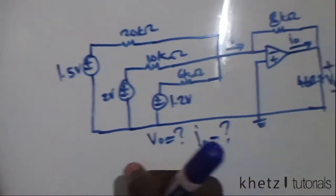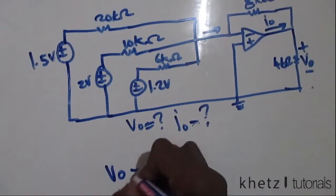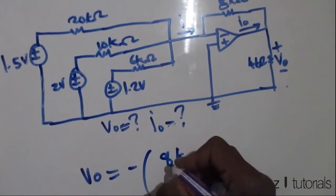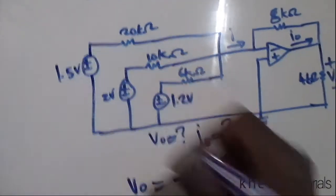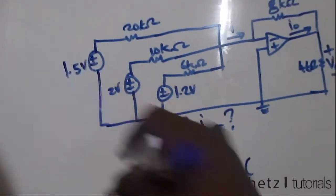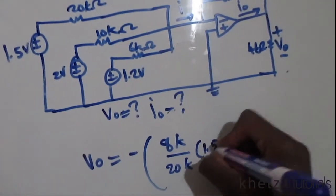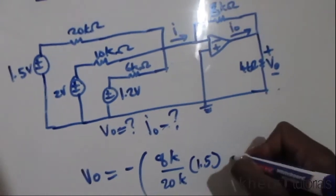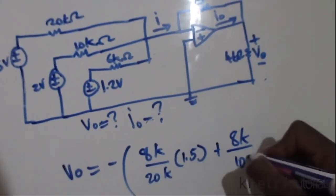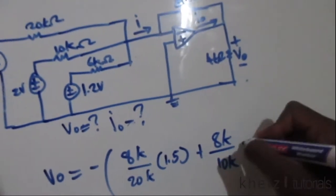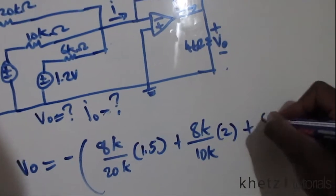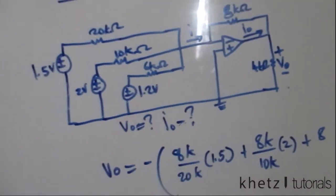To find vo, you can basically just use the summing amplifier formula, which says vo equals the negative of the feedback resistor divided by the resistor in the path, 20k in this case, multiplied by the voltage which is in the same path, which is 1.5. And again, we're going to do the same thing: feedback resistor divided by resistor in the path, multiply by the voltage source in the same path.